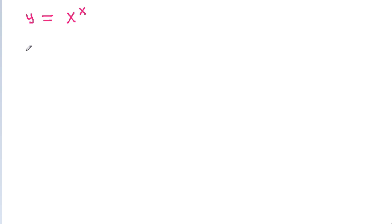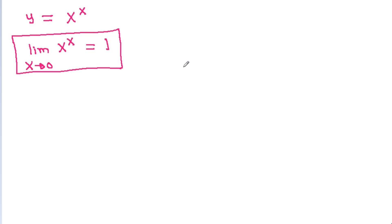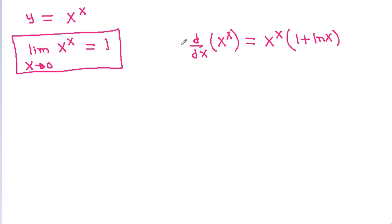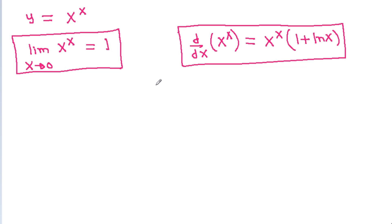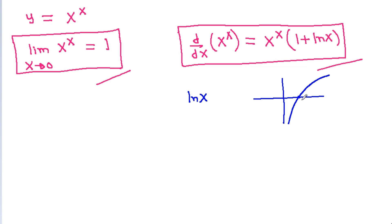Suppose y = x^x. Then the limit as x tends to 0 of x^x equals 1. And the derivative d/dx of x^x equals x^x times (1 + ln x). If you don't know these two values, I will make a separate video on this. Note that ln x is an increasing function; at x = 1 it is 0, and at x = 1/e it is -1.